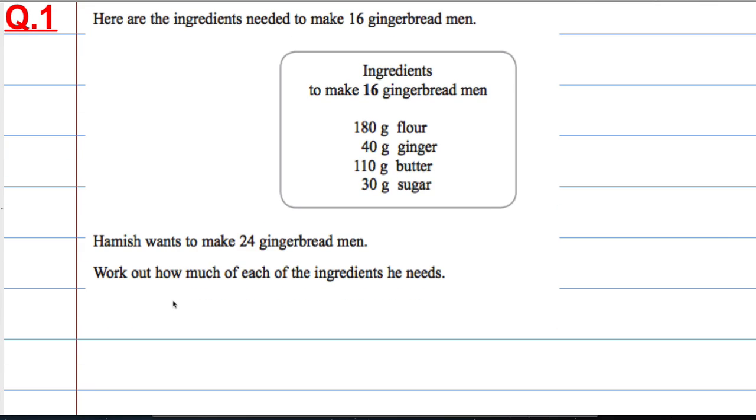Now there are so many different ways of doing this. Essentially I have the ingredients for 16 and I want to work out what the ingredients are for 24. So how can I turn 16 into 24? What I could do is half everything to work out the ingredients for 8, and then multiply that by 3 to get the ingredients for 24. So if I divide everything by 2 and then times it by 3, that will give me the correct answer.